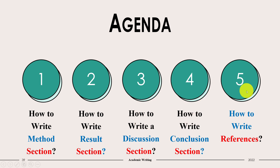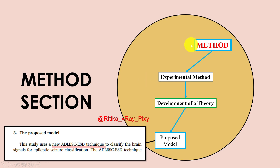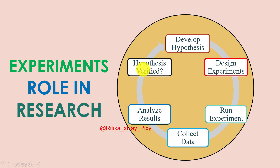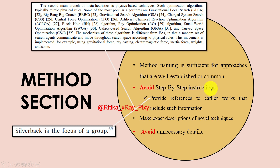The method section should be sufficiently detailed so that a researcher in the related field can reproduce the findings with enough accuracy. In the method section, avoid step-by-step instructions. Instead, provide references to earlier work that includes such information. Also avoid unnecessary details and make exact descriptions of the novel technique.